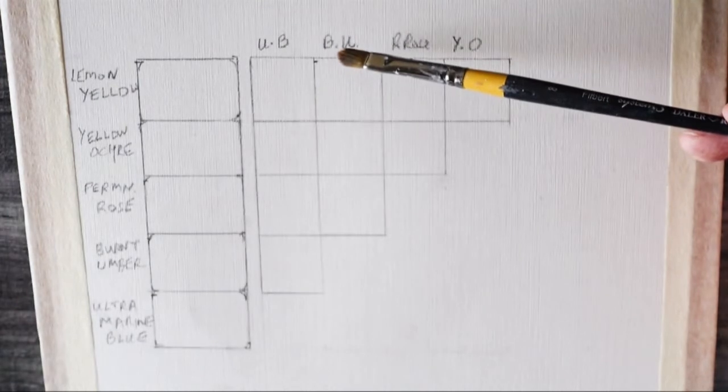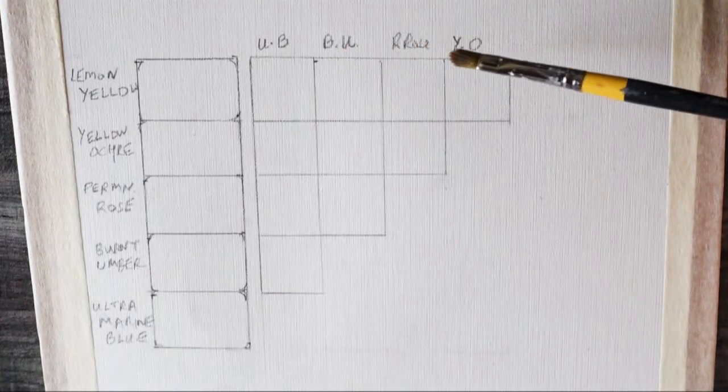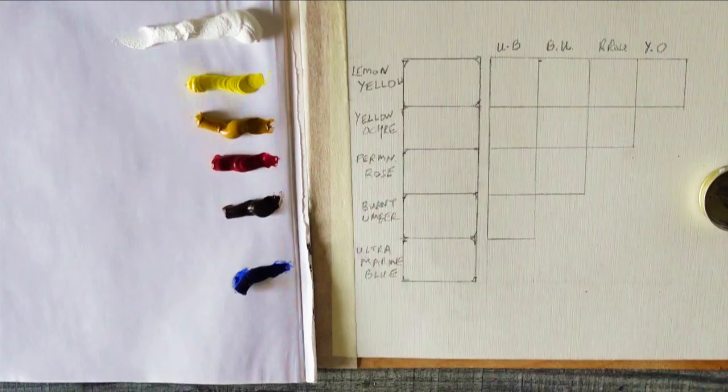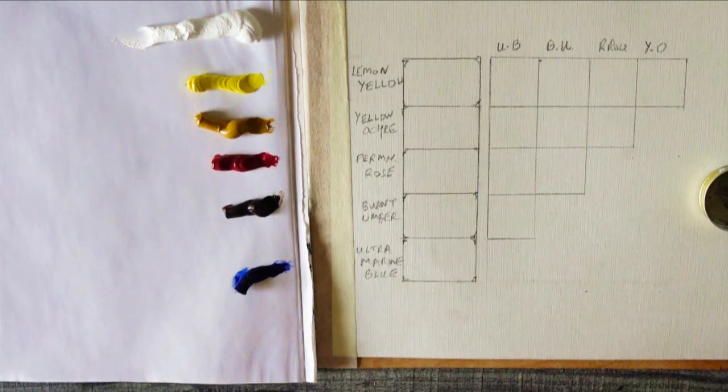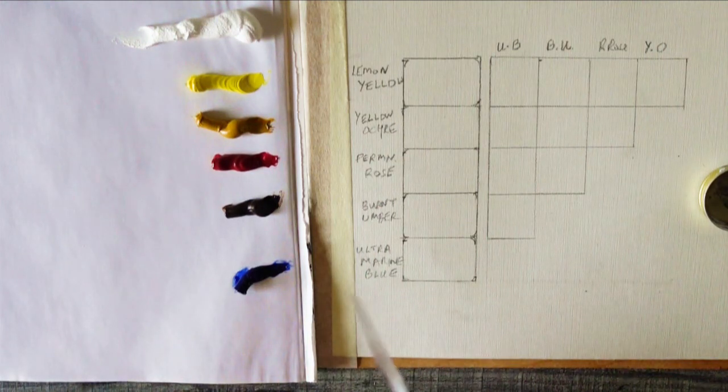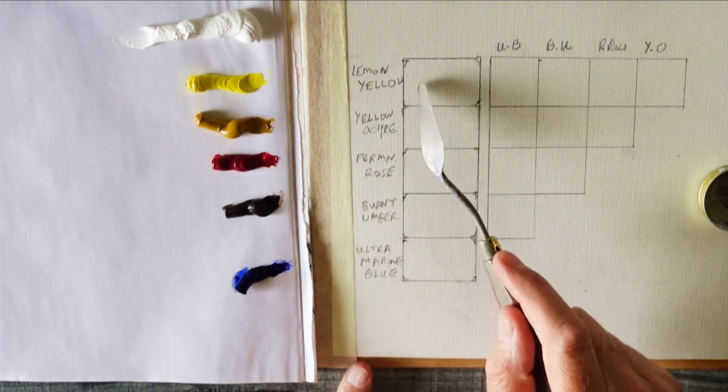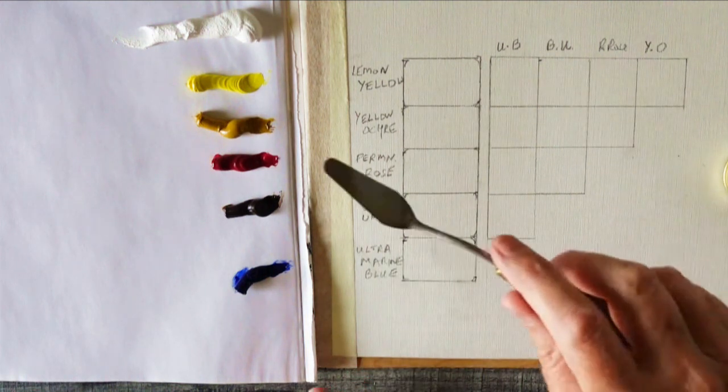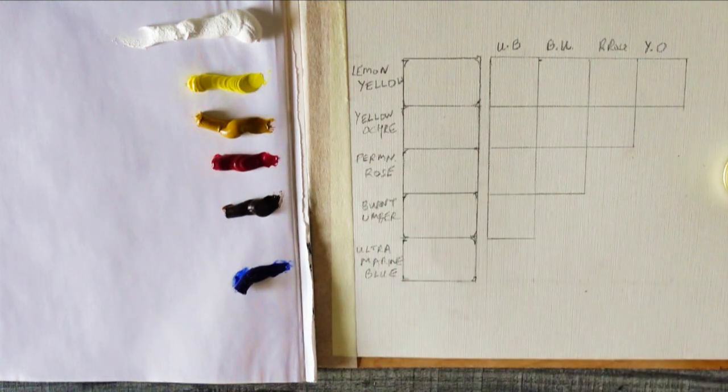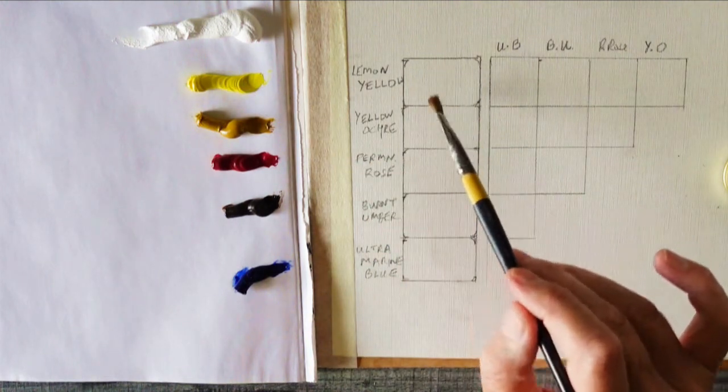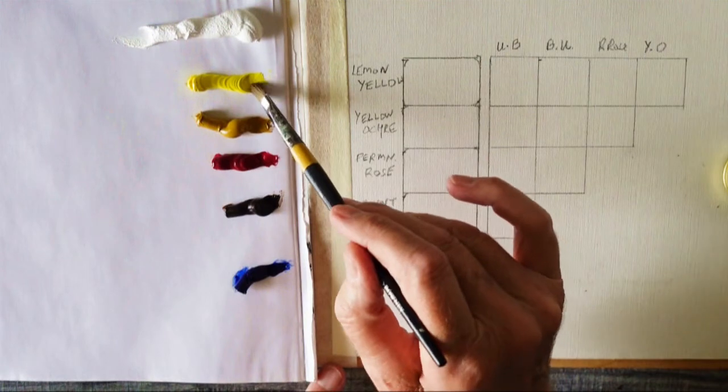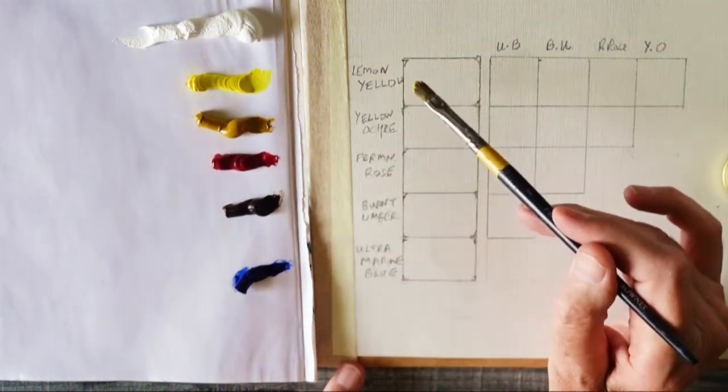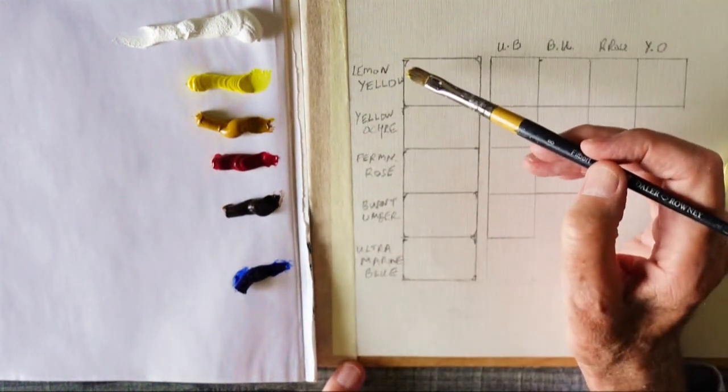Ultramarine blue, burnt umber, permanent rose, yellow ochre. So what we're gonna do now is take one color at a time and put it through all the possible changes that we can find. So we start with lemon yellow and in this square here we're just doing what happens to it when you dilute it with white.